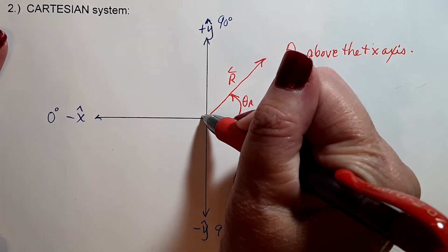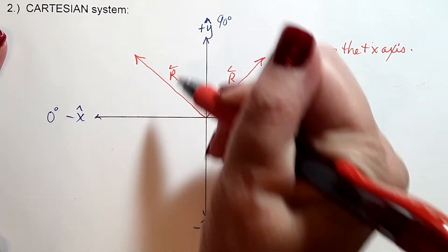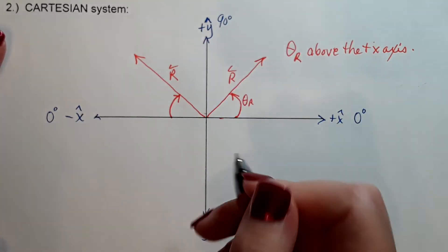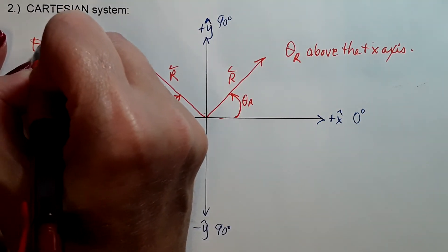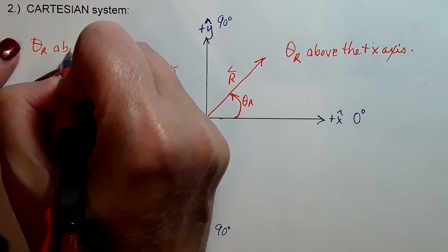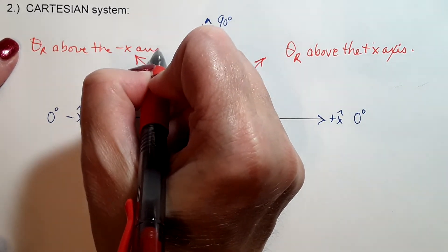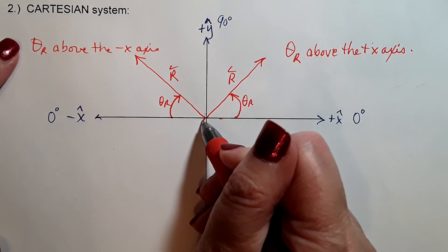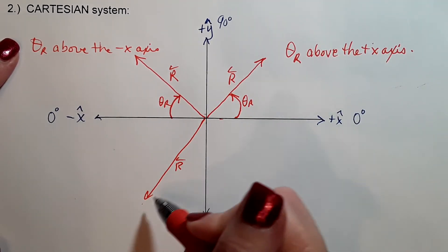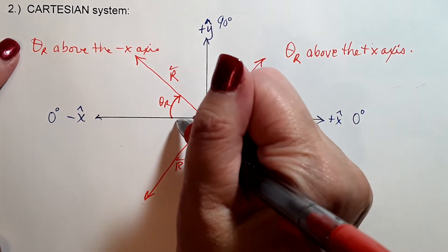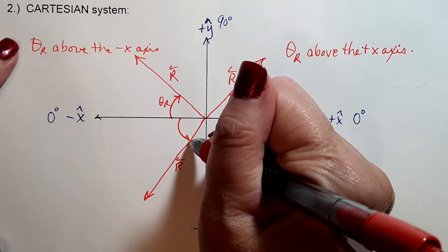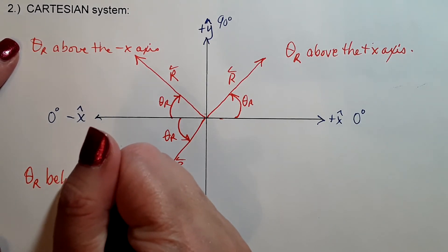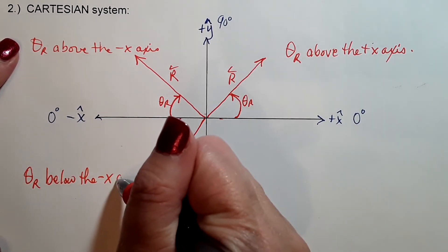What if we're in the second quadrant? The closest horizontal is negative x, so we start there at zero degrees and measure around towards 90 degrees. We say theta-r is so many degrees above the negative x-axis. If we're in the third quadrant, we start at the closest horizontal — negative x — and measure around towards 90 degrees below it. We state it as so many degrees below the negative x-axis.